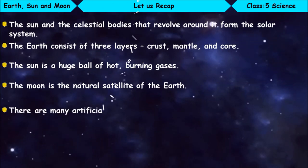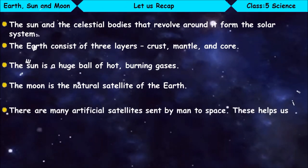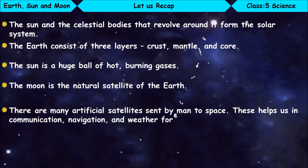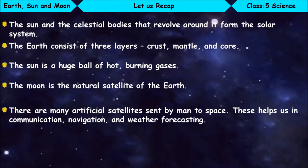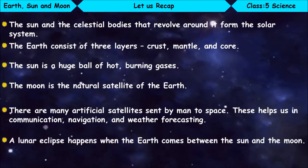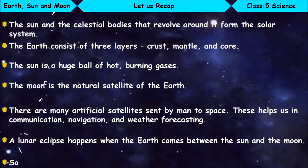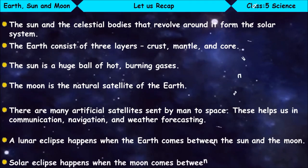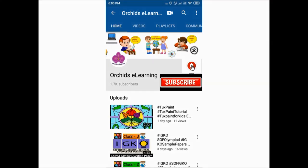There are many artificial satellites sent by man to space. These help us in communication, navigation, and weather forecasting. A lunar eclipse happens when the Earth comes between the Sun and the Moon. A solar eclipse happens when the Moon comes between the Sun and the Earth.